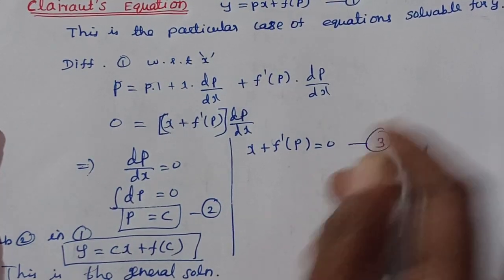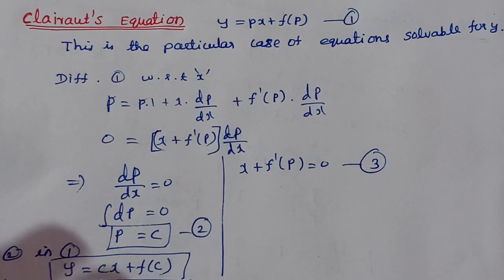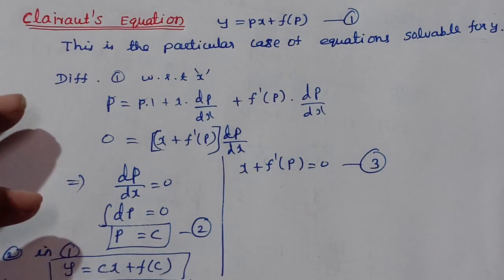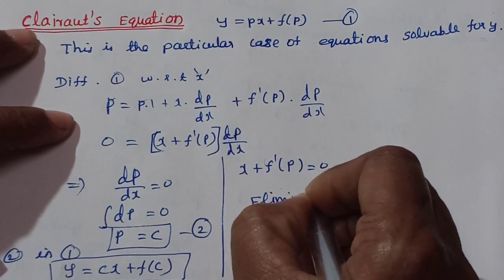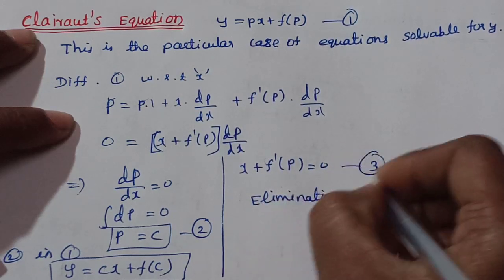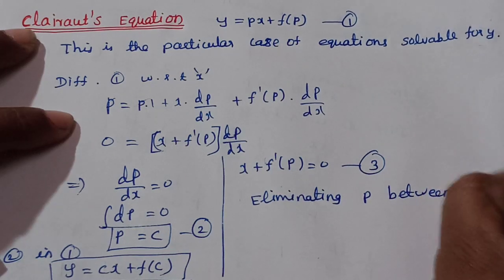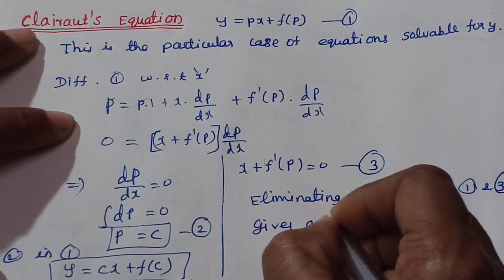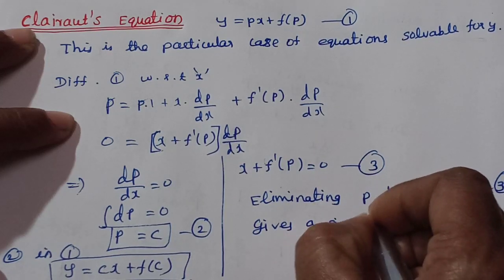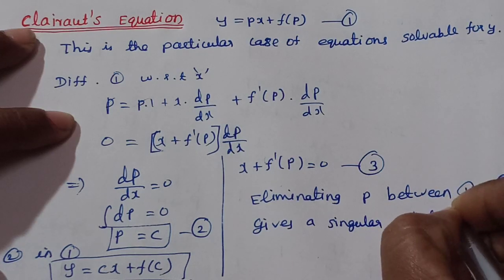Eliminating p between equation 1 and equation 3 — using Case 2, x plus f-prime of p equals 0 — gives the singular solution.